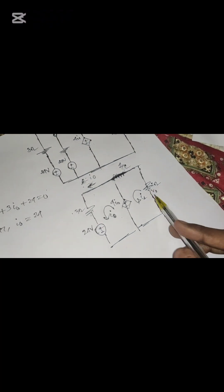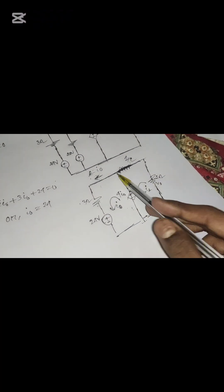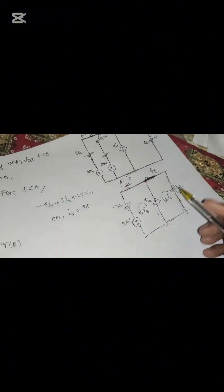Now what is the value of V_0? V_0 is the voltage across these two terminals, which equals the voltage across the 2-ohm resistance. The value of the 2-ohm resistance voltage is V_0.